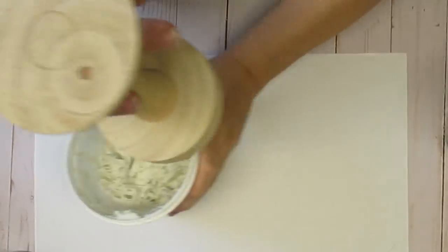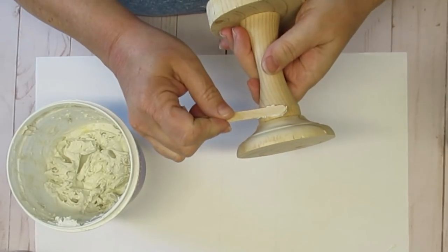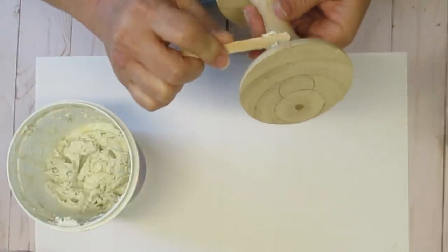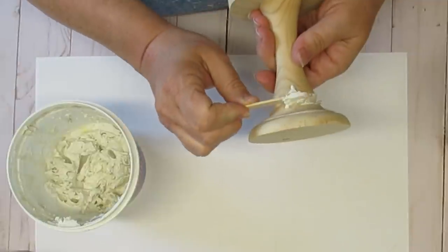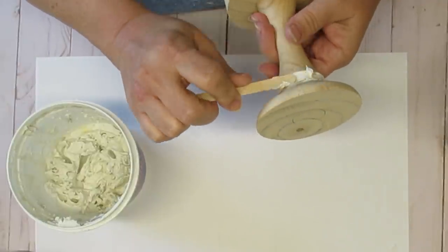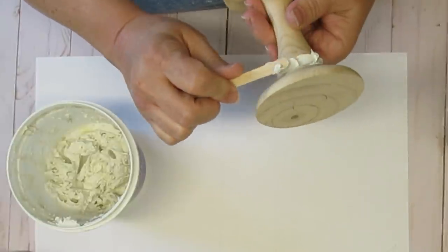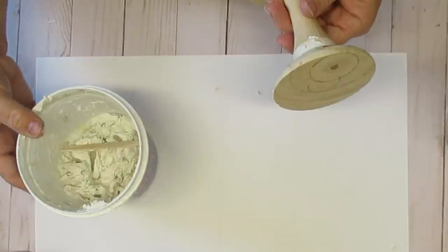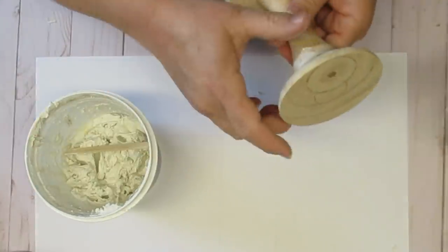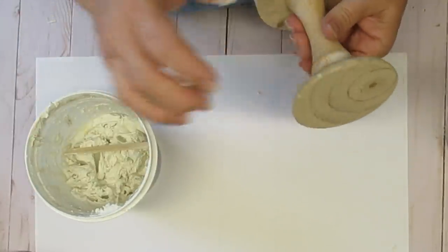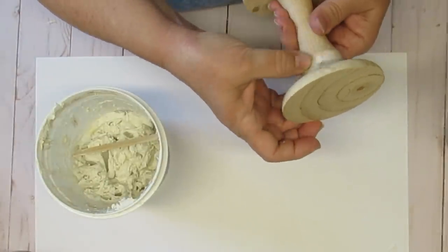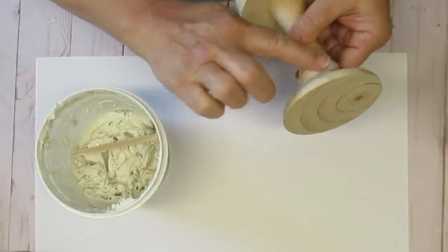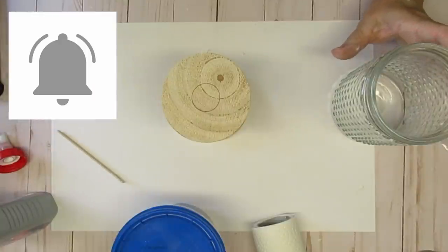My last project today starts out with this wooden candlestick, which was also a thrifted find for I think it was a dollar ninety-nine, but originally came from Michael's. It still had the Art Minds label on the bottom of it. So that's how I know it came from Michael's. Anyhow, it's got some cracks in it and it's not a hundred percent nicely sanded down finished wood, so I just wanted to fill in some of that. I'm just using some spackle and a popsicle stick, and then I'm just going to use my finger to just push it in and make it nice and smooth.